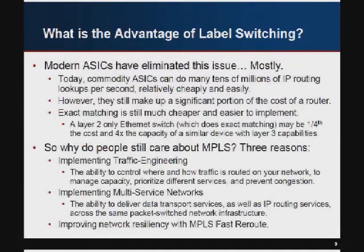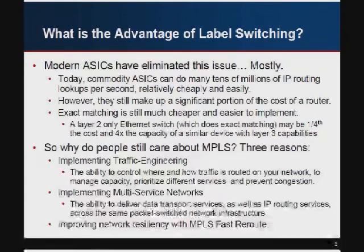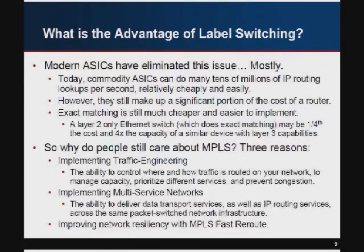Modern ASICs have mostly eliminated this issue. You can purchase a commodity ASIC with tens or hundreds of millions of lookups per second for a few hundred dollars, but they still make up a significant portion of box cost. Even today you can get double or four times the performance at a quarter of the cost for a layer 2 only box, and the difference is purely exact match versus having to do a longest prefix match lookup. So even though it's been solved, it still adds a lot to the cost.